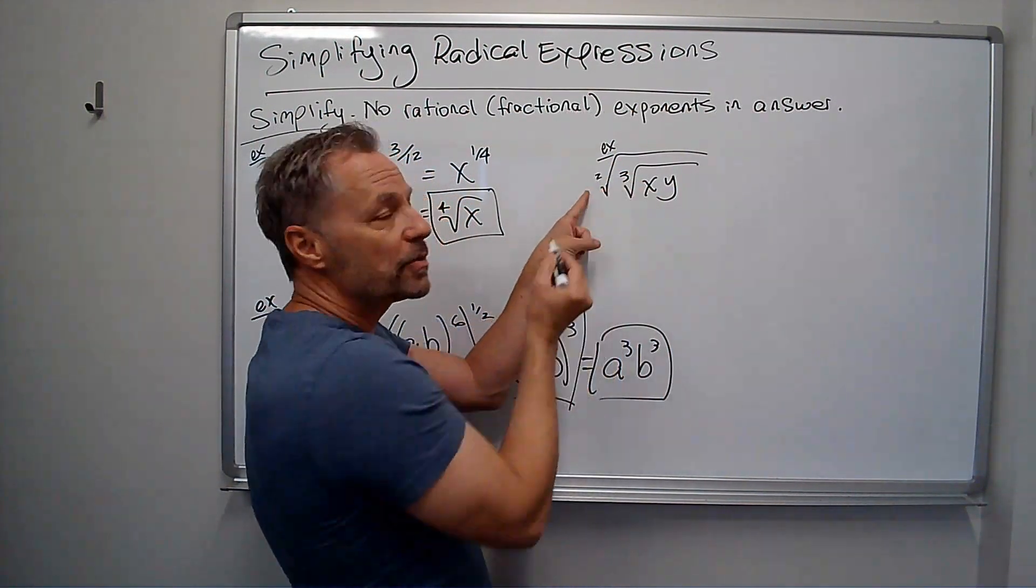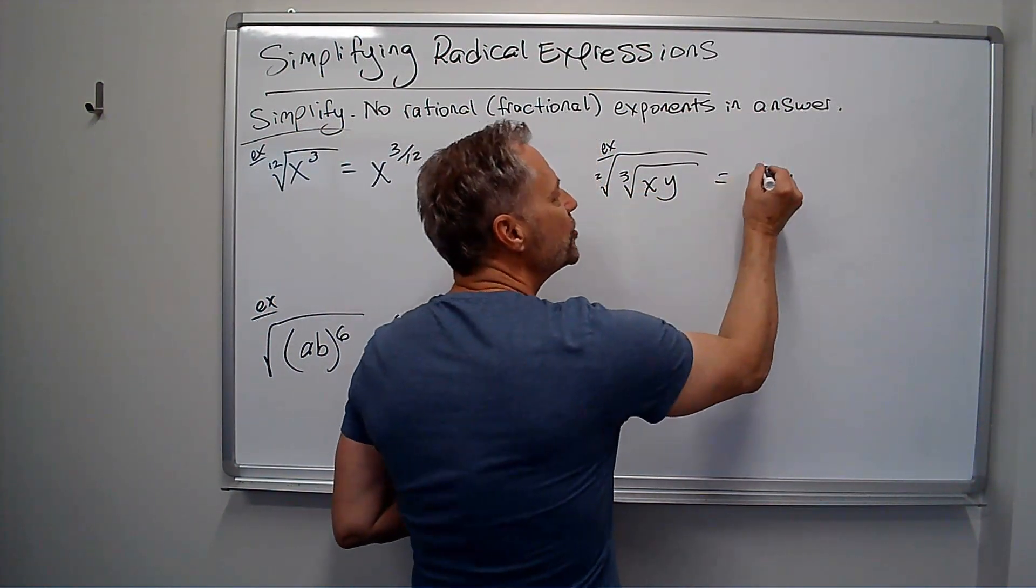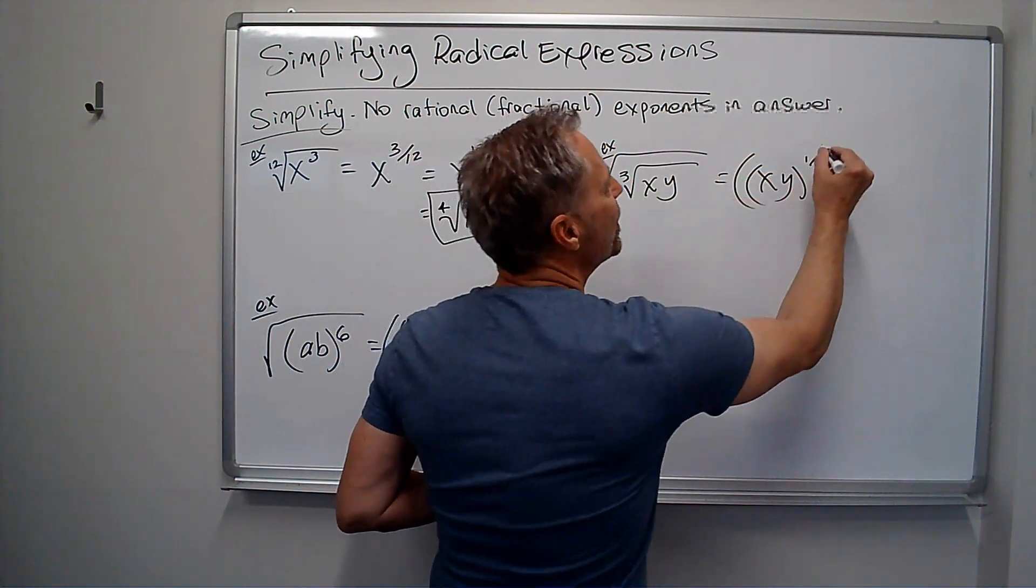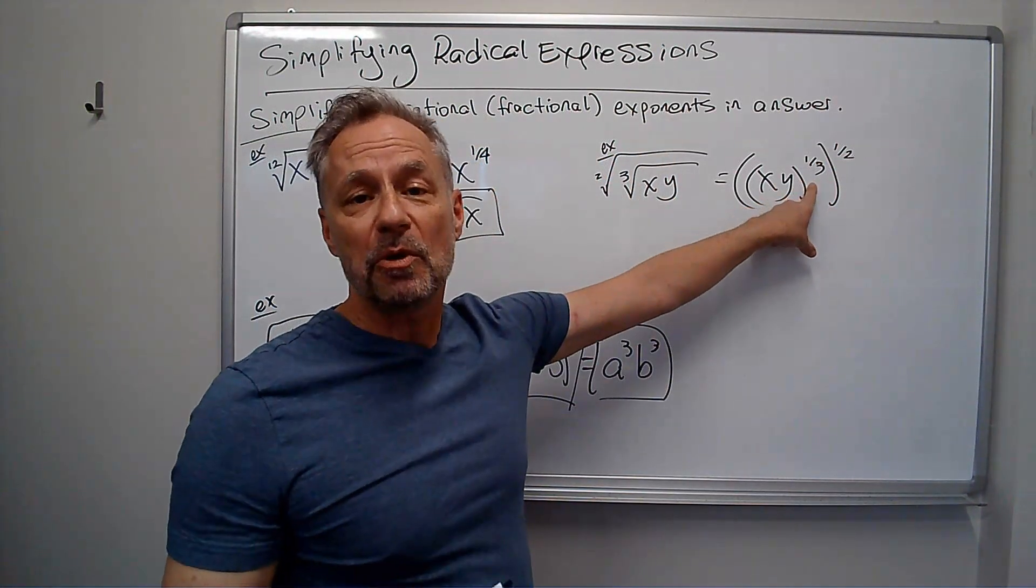So remember, this is really the square root. There's a two there. So this xy, the third root is the one-third power. The square root is the one-half power. And then we remember we just multiply exponents.